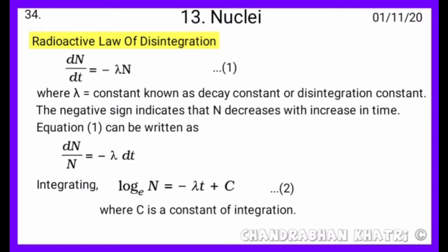The negative sign indicates that N decreases with increase in time. Equation 1 can be written as dn upon N equals minus lambda dt. Integrating, log N base e equals minus lambda t plus C. This is equation second, where C is a constant of integration.